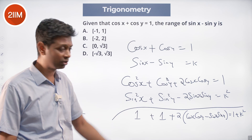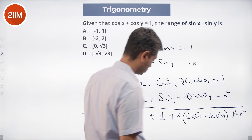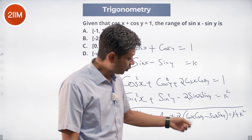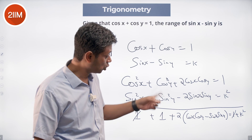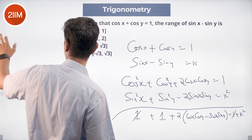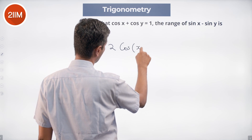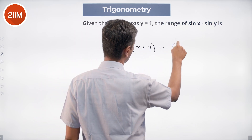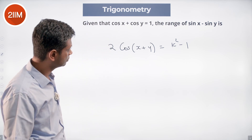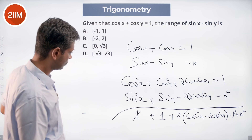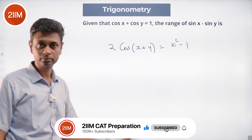So 2 times (cos x cos y minus sine x sine y) equals 1 plus k². That's brilliant — 1 plus 1 plus 2 times cos(x+y) equals 1 plus k². The 1s simplify: cos x cos y minus sine x sine y is cos(x+y), so 2 cos(x+y) equals k² minus 1.